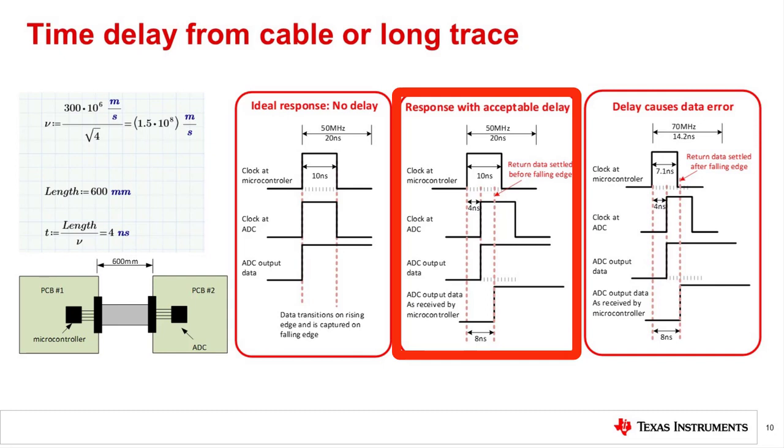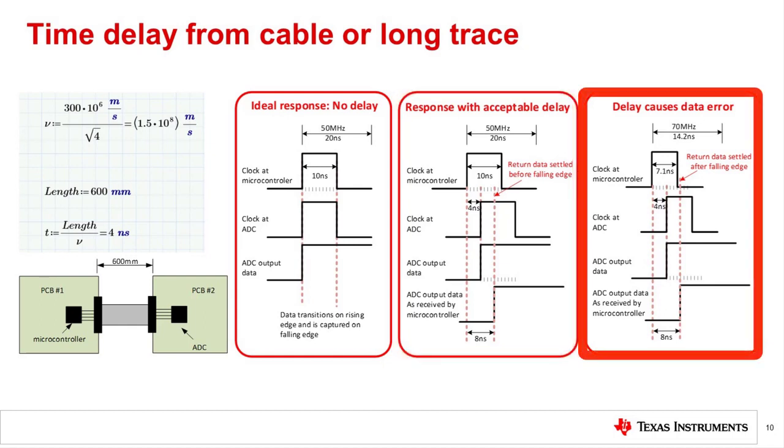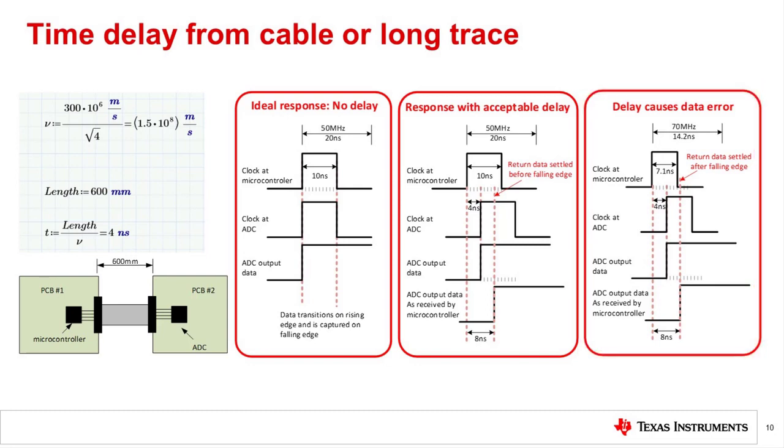The last picture has the same delays as the previous example, but the clock is running at a higher frequency of 70 MHz. In this case, the data signal is received after the falling edge of the clock signal so the data is not properly detected. In some cases, this kind of issue can be avoided using a return clock. Another similar issue can occur when communication lines are of different lengths.